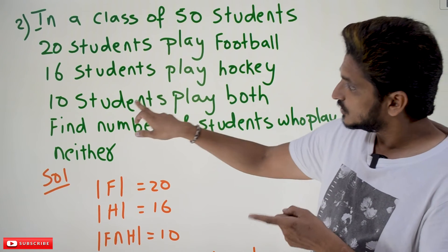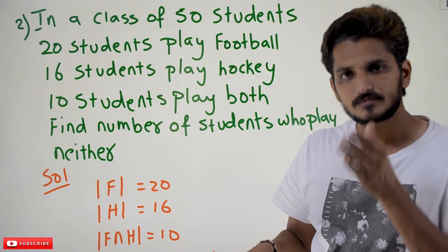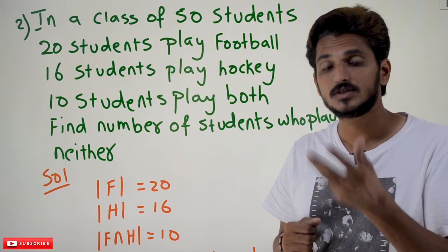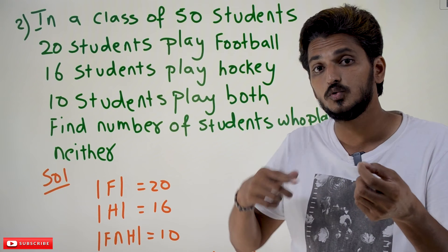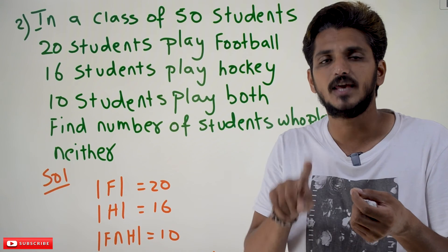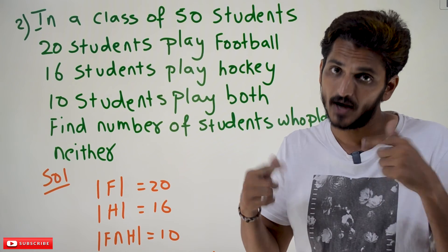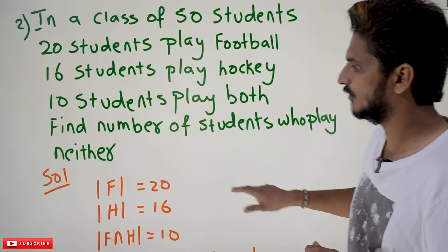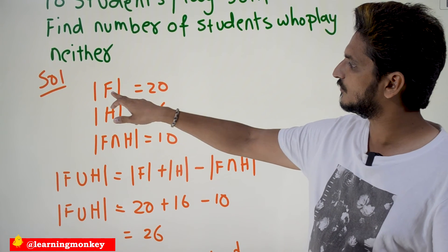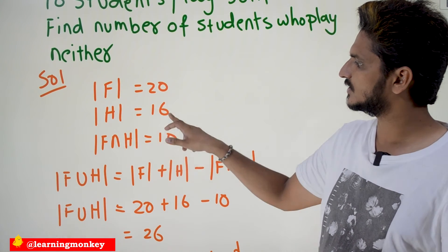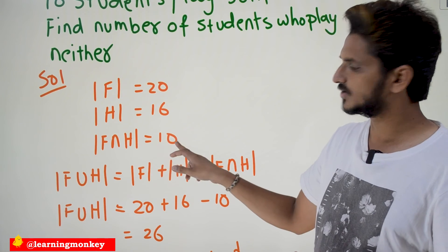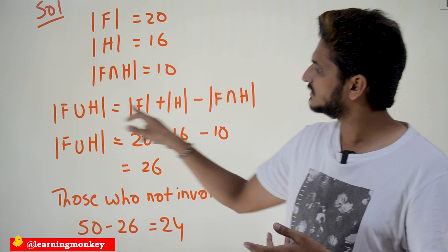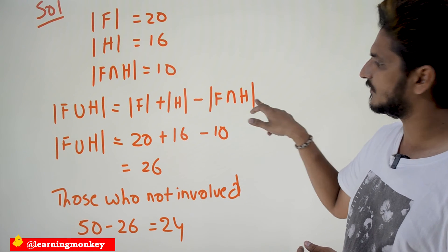We are given the number of students who play football, hockey, and both — both meaning A intersection B. If we find A union B, that gives us the number of students playing any one of the games. We then subtract that from the total. By the Principle of Inclusion and Exclusion: |F ∪ H| = |F| + |H| − |F ∩ H| = 20 + 16 − 10.